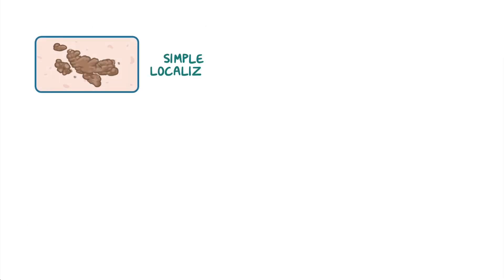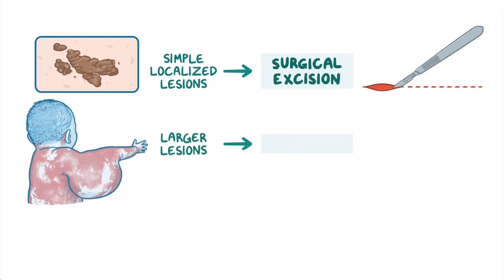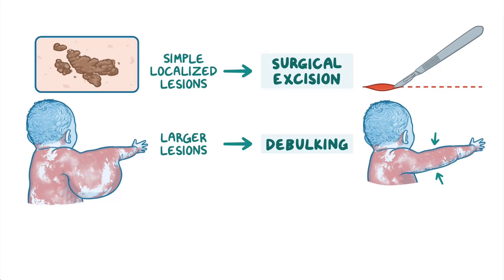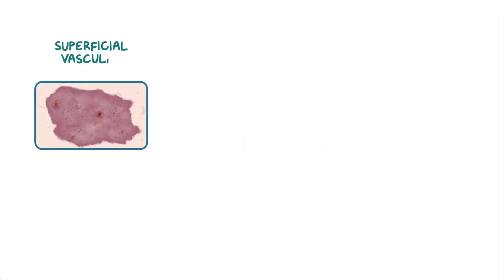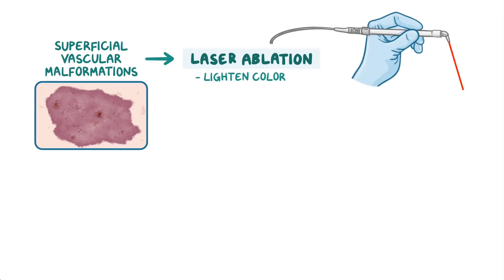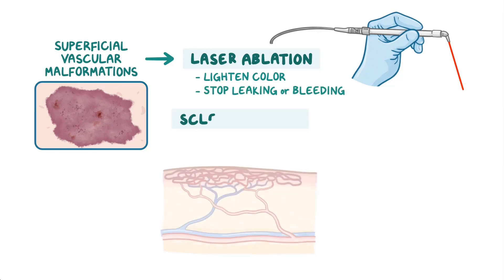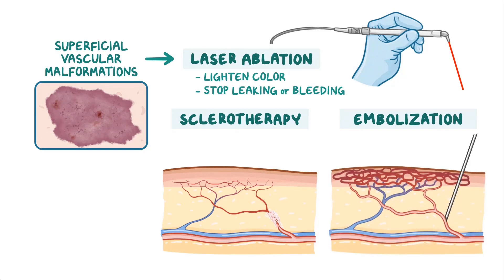In the case of simple localized lesions, overgrown tissue may be surgically excised. In larger lesions, debulking or removal of part of the lesion may be performed. If or when the tissue regrows, repeated surgeries may be needed. Superficial vascular malformations may be treated with laser ablation, most commonly to lighten color of capillary malformations or to stop leaking or bleeding from superficial lymphatic malformations. Sclerotherapy, where a chemical is injected into the defective vessel causing it to scar down and close off, or embolization, where injections are given to clot off the defective vessel artificially, may be performed.